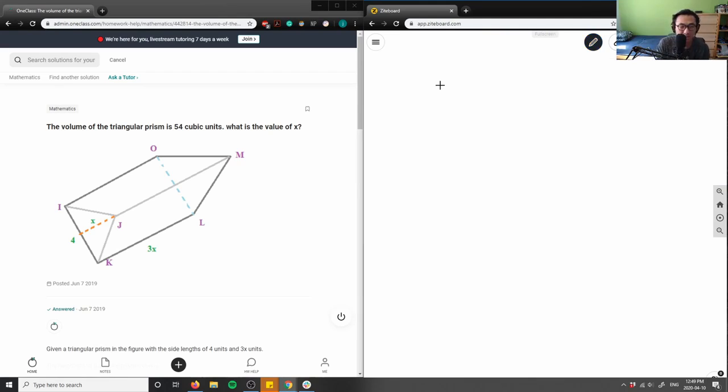No problem, Panda. This is a volume of a triangular prism is 54 cubic units. What is the value of x?